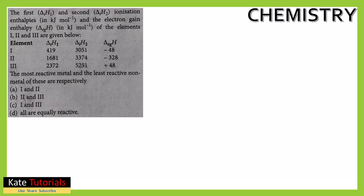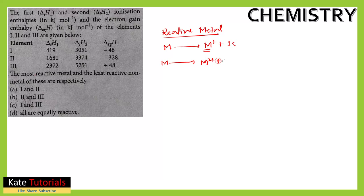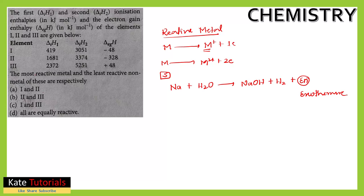For the most reactive metal, we need to understand metal properties. A metal easily gives one electron to become a cation. For example, group one alkali metals form M⁺ and alkaline earth metals form M²⁺. Alkali metals are highly reactive — for example, sodium added to water forms sodium hydroxide and NaOH along with the liberation of hydrogen gas, and energy is released, making it an exothermic reaction.